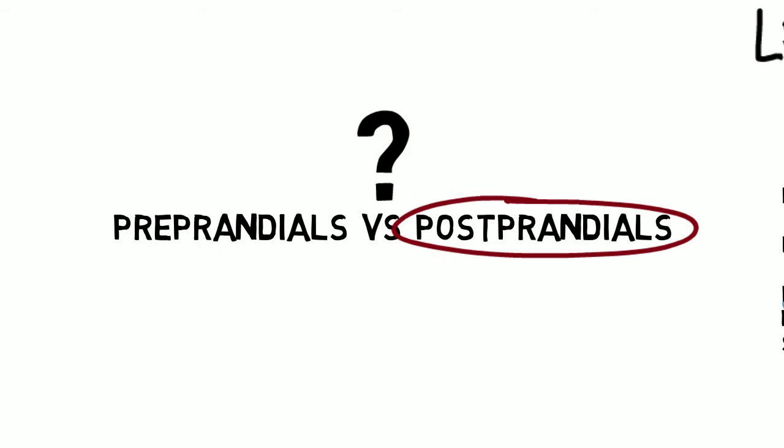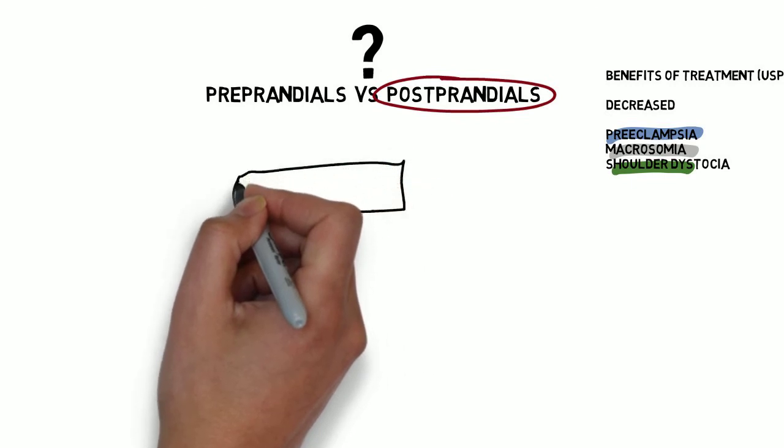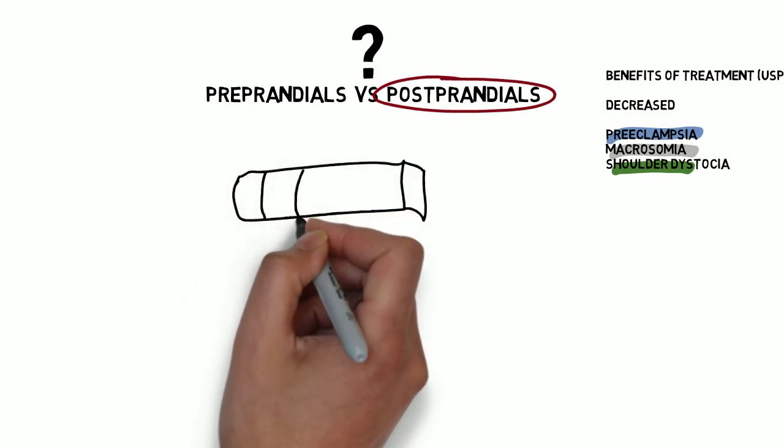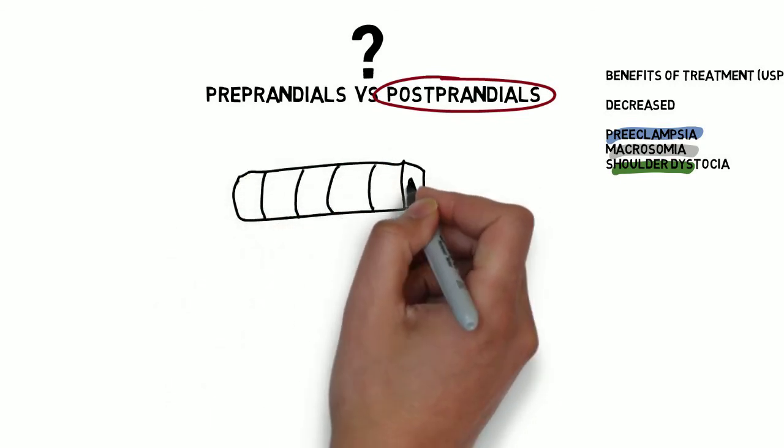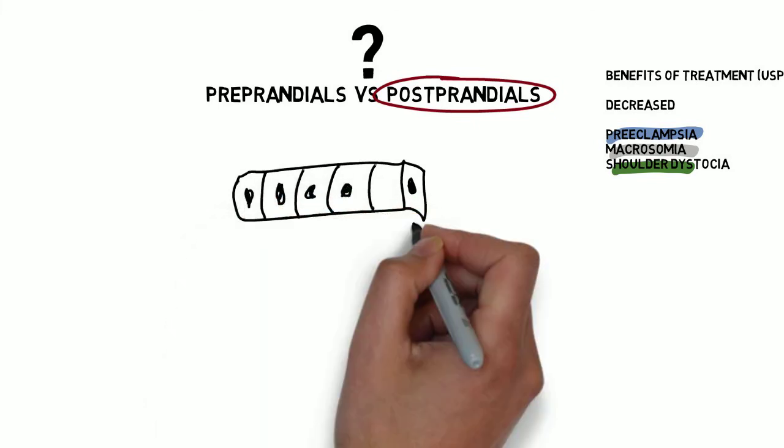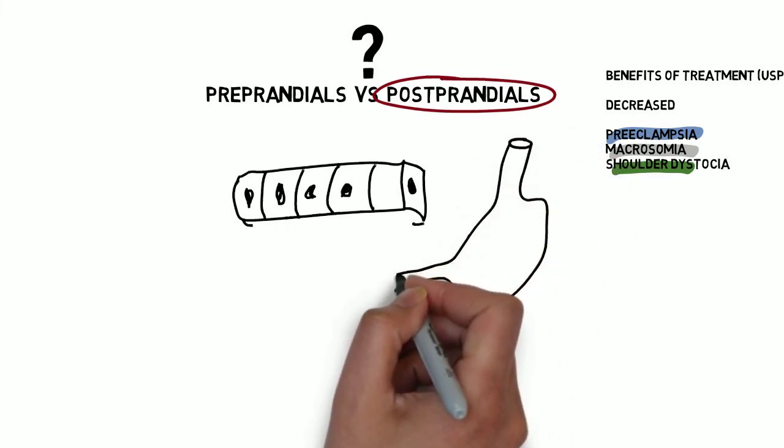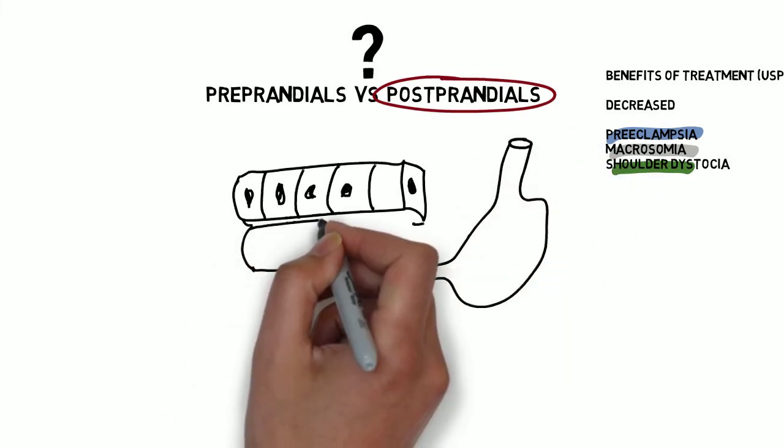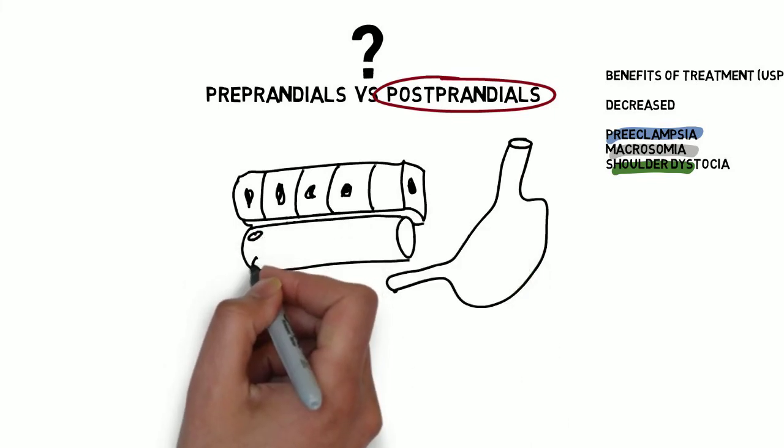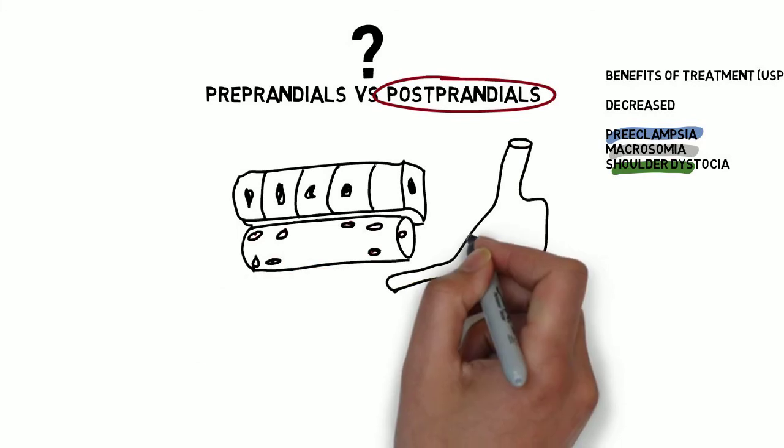Before we get into actual cutoffs of what's considered abnormal as they're testing, what are we going to do if they are abnormal? Well, generally, we start with non-pharmacologic treatment, which is diet and exercise. Actually, we start that even if the blood sugars are normal, because eventually they won't be. So for that reason, we'll talk about diet first, then we'll talk about the abnormal values and pharmacologic treatment in the next episode.